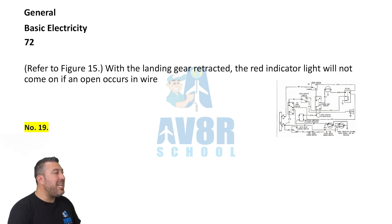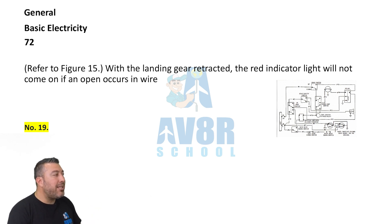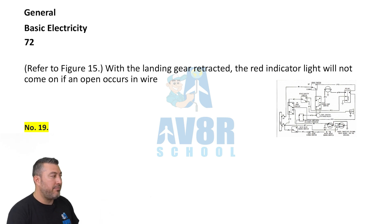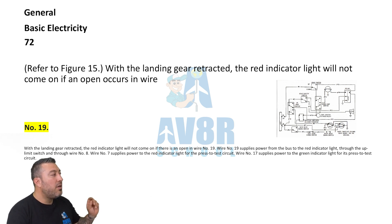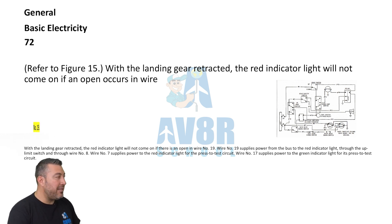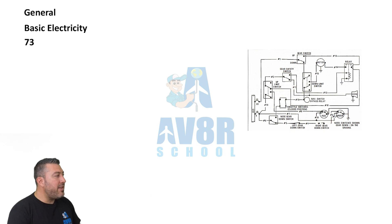Question 72 refers to figure 15. The answer is number 19. With the landing gear retracted, the red indicator light will not come on if an open occurs on wire 19.